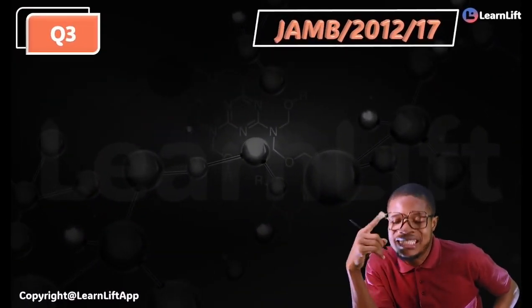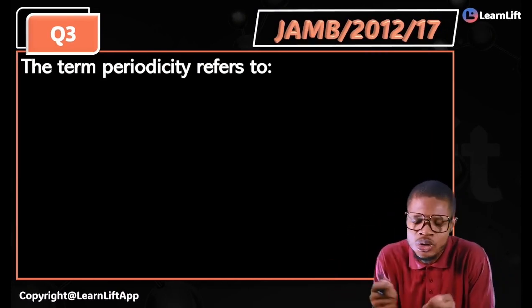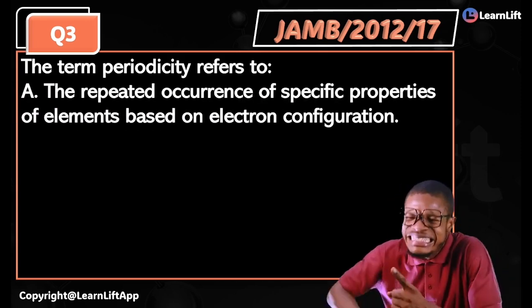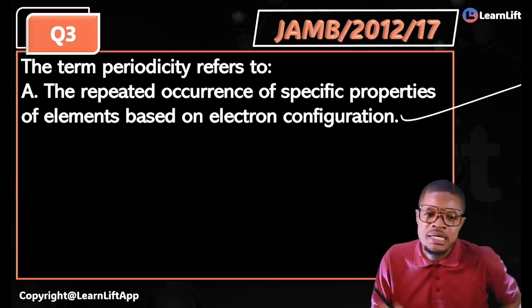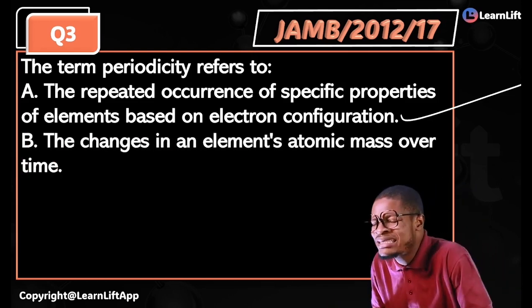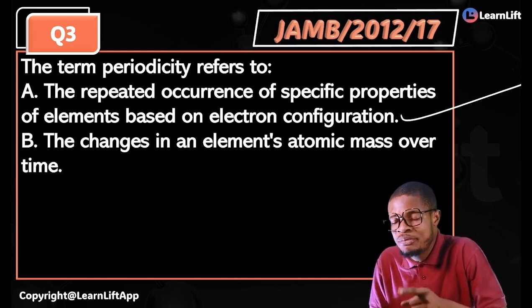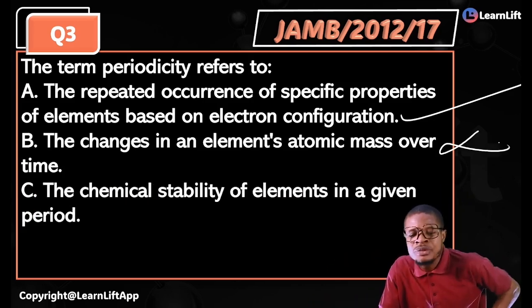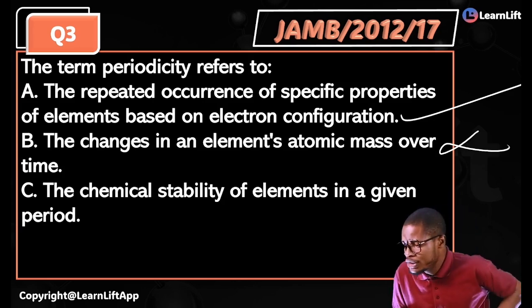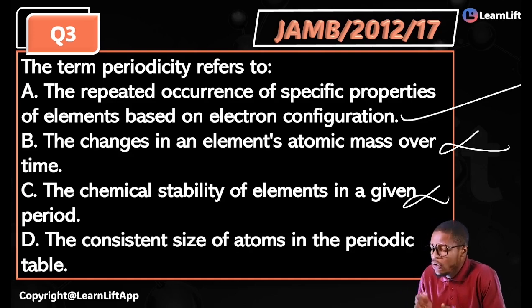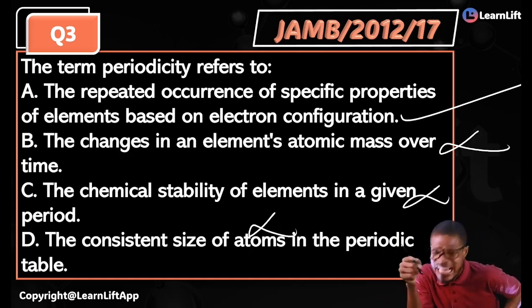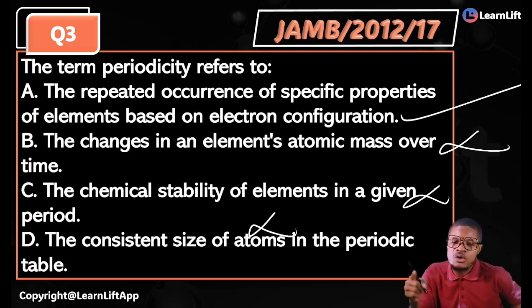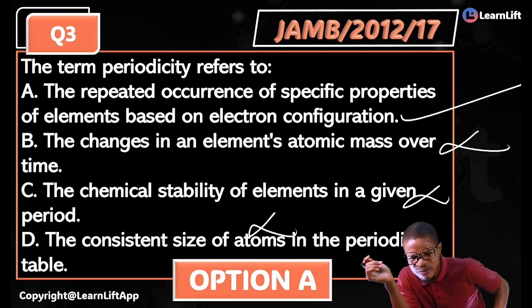JAM 2012 Question 17: 'The term periodicity refers to?' Option A: the repeated reoccurrence of specific properties of elements based on electron configuration — correct. Option B: the change in an element's atomic mass over time — not true. Option C: the chemical stability of elements in a given period — not true. Option D: the consistent size of atoms in the periodic table — not true. The correct answer is Option A.